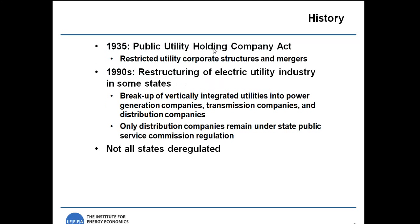I want to start with a little history. In the 1920s, major utility holding company empires collapsed during the 1929 financial crisis, and in response, in 1935, Congress passed the Public Utility Holding Company Act, which placed restrictions on utility operations.